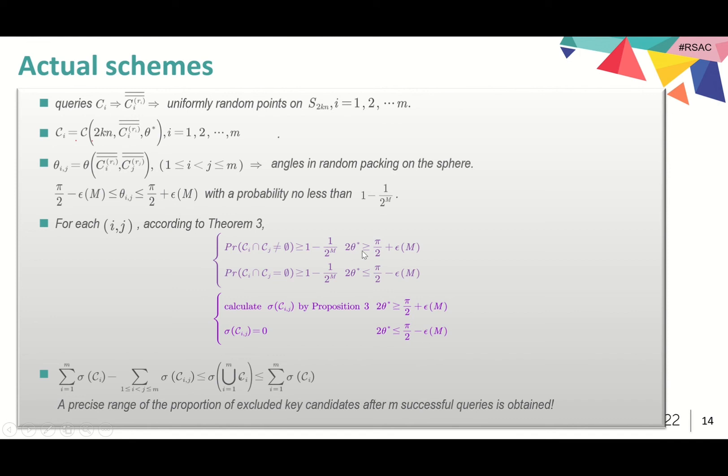If 2 theta star is larger than pi over 2 plus epsilon_m, the two caps will intersect with the probability no less than 1 minus 1 over 2^m. And we can use Proposition 3 to calculate the proportion of the surface area of the intersection of c_i and c_j.